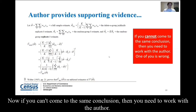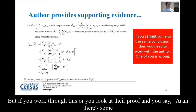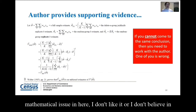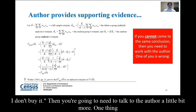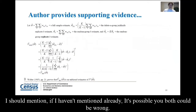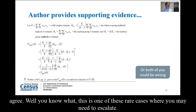Now, if you can't come to the same conclusion, you need to work with the author — one of you is wrong. If you work through their proof and see a mathematical issue, or you don't believe in the cited reference — 'Walter was an old dude, talking 1985 and we're now in the 21st century' — then you're going to need to talk to the author more. It's also possible that you both could be wrong. If there's a lot of disagreement and you can't agree, this is one of those rare cases where you may need to escalate.